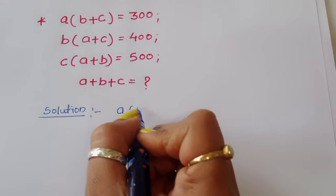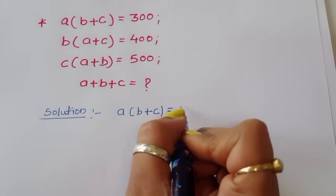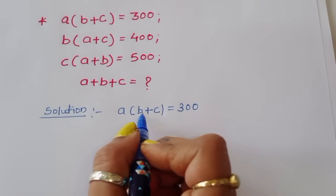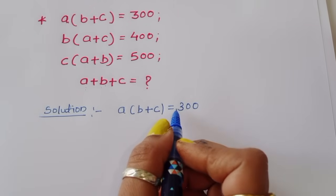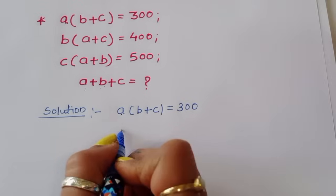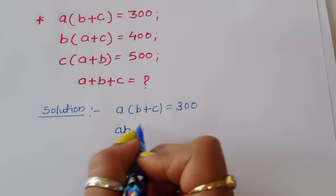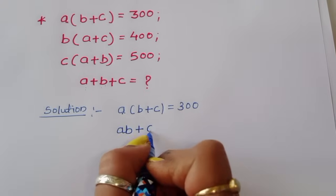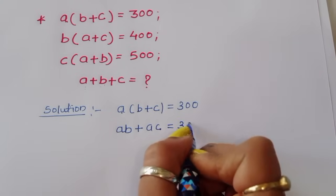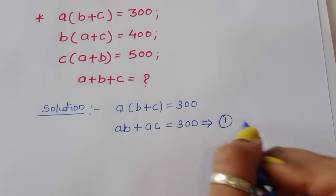First, A times B plus C is equal to 300. We can multiply this term, so AB plus AC is equal to 300. We are giving this equation number 1.